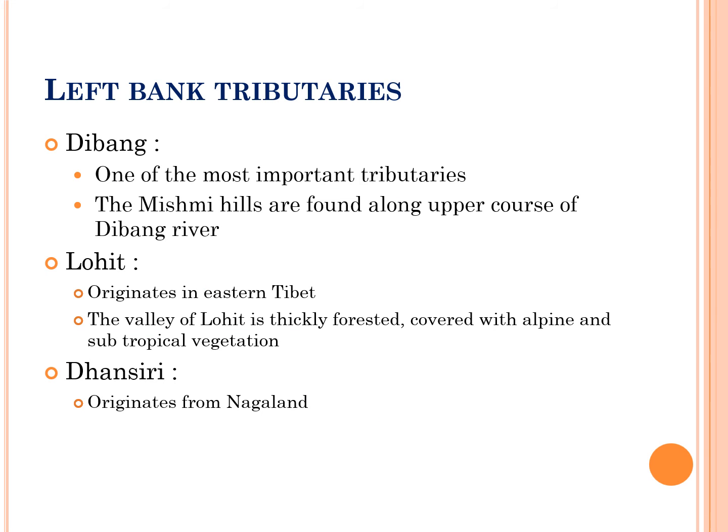The first left bank tributary is Dibang river. The river Dibang is one of the Brahmaputra's most important tributaries. The Mishmi hills are found along the upper course of the Dibang river. The next left tributary is Lohit river. The river Lohit originates in eastern Tibet. The valley of Lohit is thickly forested, covered with alpine and subtropical vegetation.